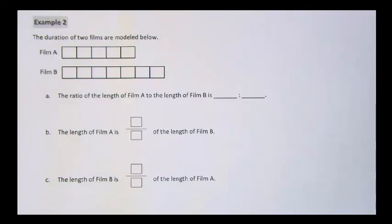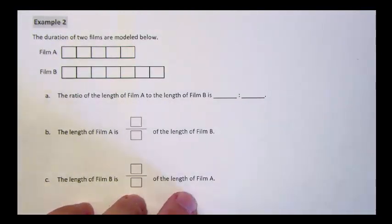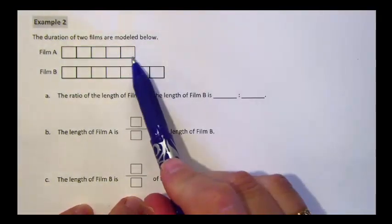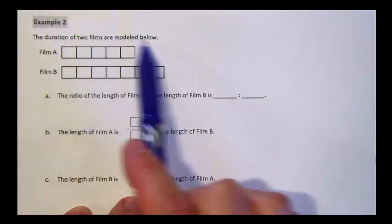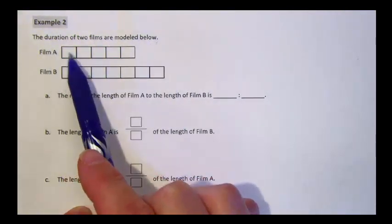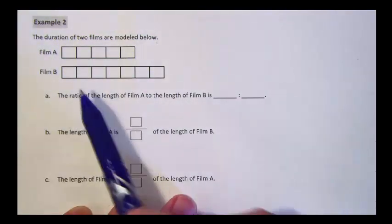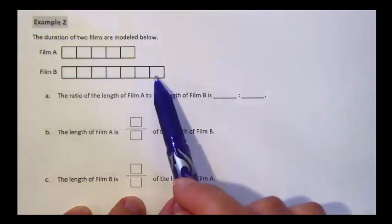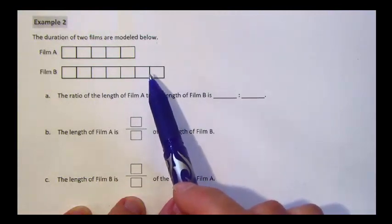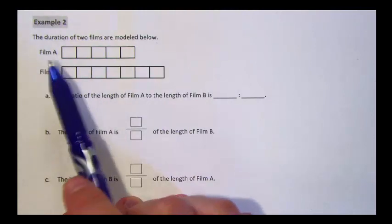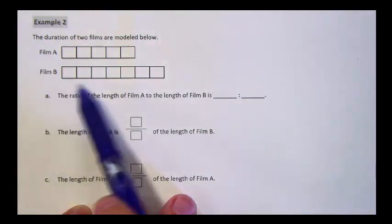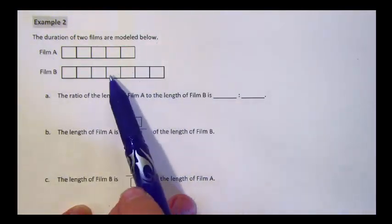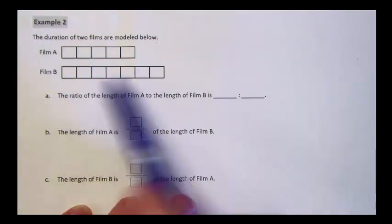In this example, we're going to take a look at the value of a ratio again. Remember, the value of the ratio is what you get when you divide the two parts of the ratio. We need to write the ratio for this situation — the durations of two films are modeled below. Film A has five parts, and film B has seven parts. Duration means how long a movie is. Because film B has a longer tape diagram and each section is the same amount, film B is longer.